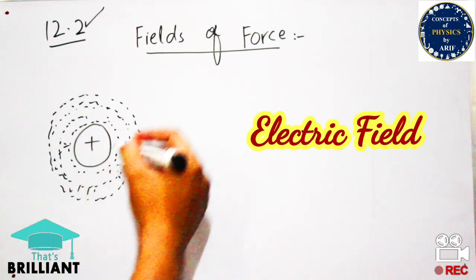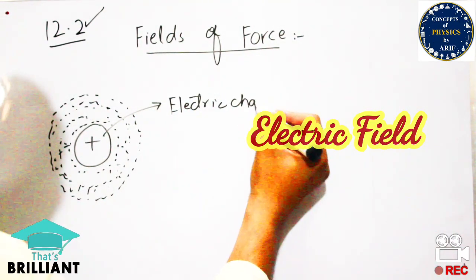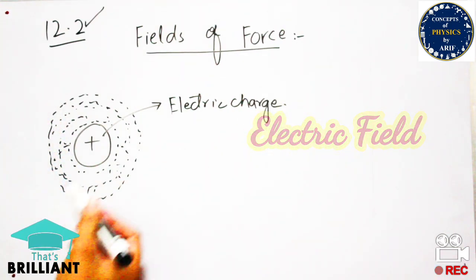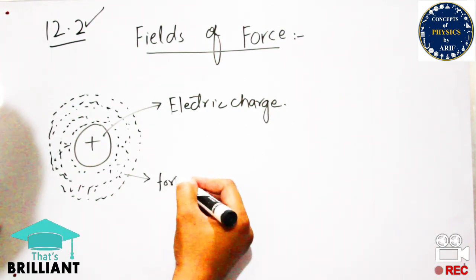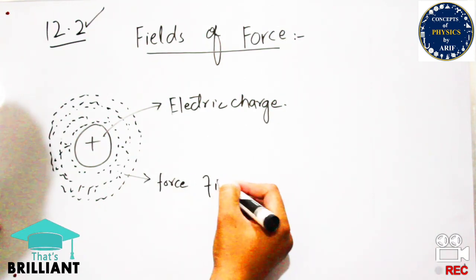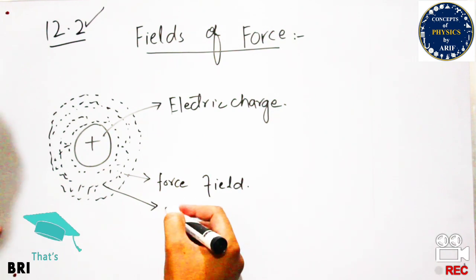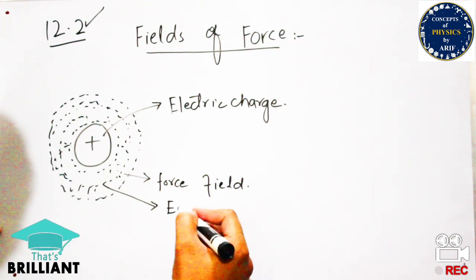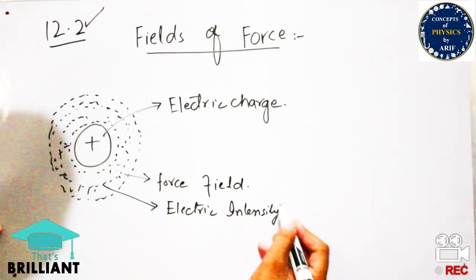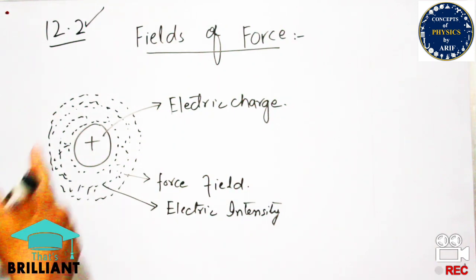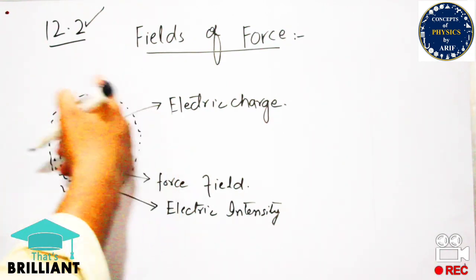We will draw a positive charge, which we call the source charge. The dotted lines around it represent the electric lines of force — the vicinity of the electric field around this source charge. These dotted lines show the electric field intensity or electric field in the region surrounding the source charge.